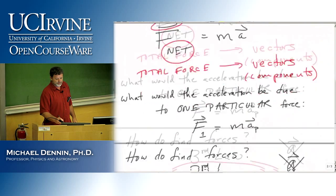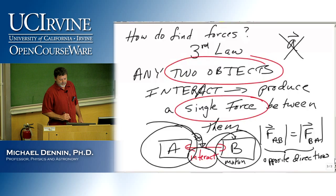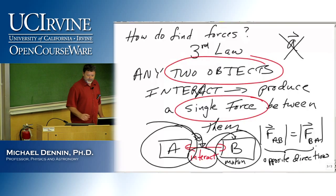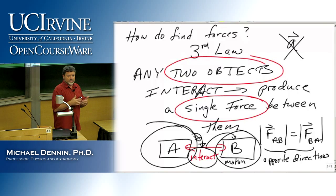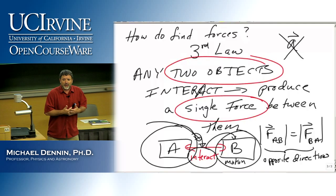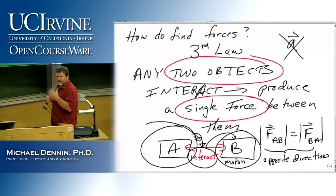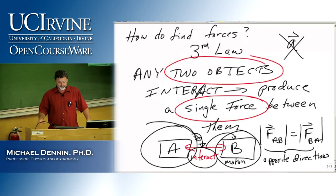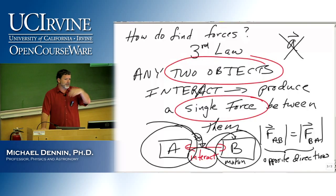Could you clarify the absolute value: the force of A due to B equals the force of B due to A? If I were to take off the absolute value, then one is the negative value of the other because they're in opposite directions. I prefer to keep it separate: the magnitude is the same, the directions are opposite, rather than using a minus sign. Because you don't know which one's going to be negative — you don't know which direction you're going to pick as positive.